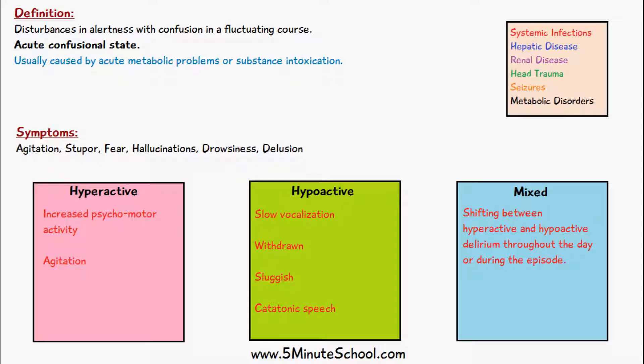In hypoactive delirium, the patient may seem withdrawn and inactive, they may appear sluggish, and there is catatonic speech which basically means they are repeating the same thing, or they could be repeating the same kind of movement.